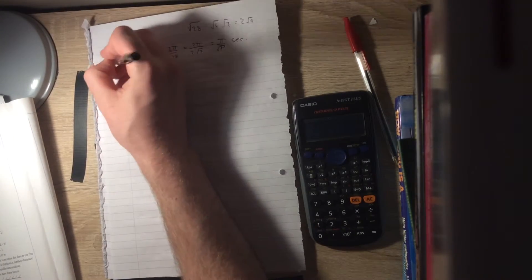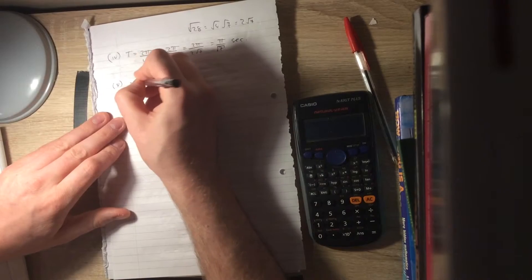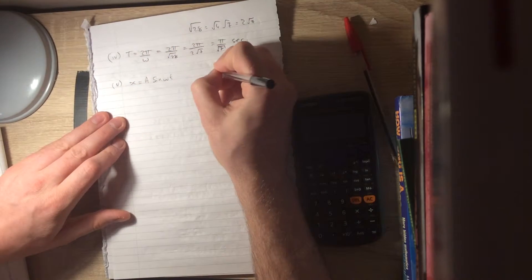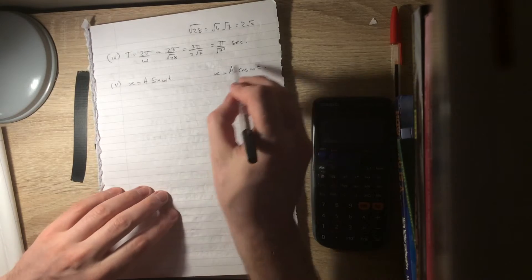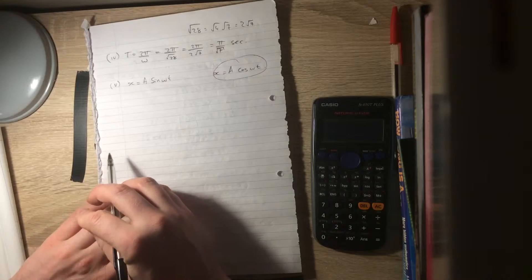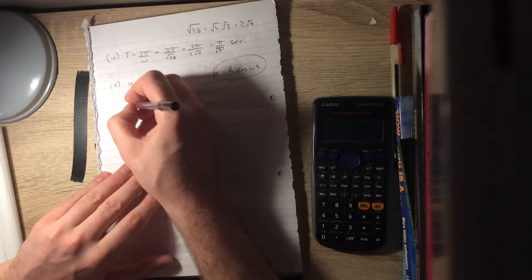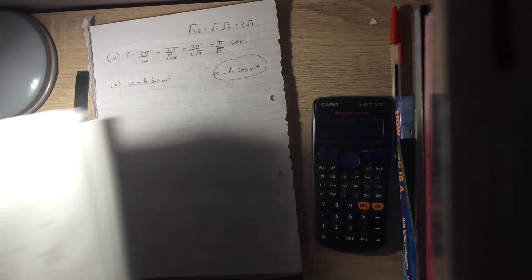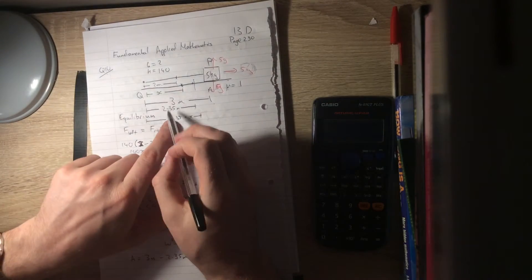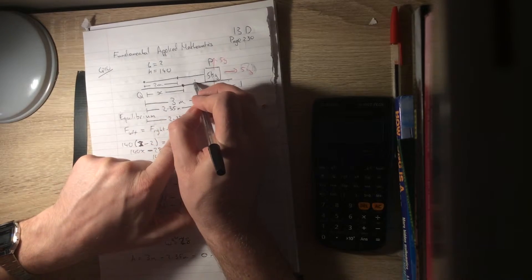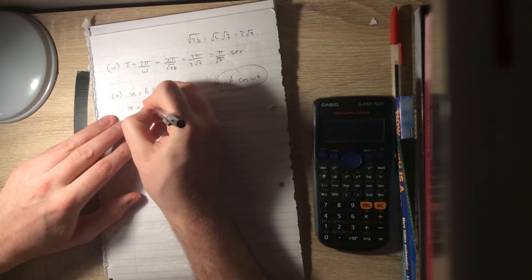And part 5, calculate the time taken by the particle to travel from A to a point 2 metres from Q. So we need to make our decision, are we going to use A sine omega t or A cos omega t for these time problems? And because we're starting from an extreme point rather than from the centre, it's going to be A cos omega t. When it's travelled from A to a point 2 metres from Q, that's 0.35 beyond equilibrium. So 2 metres from Q, there's our equilibrium, we've gone past that by 35 centimetres, by 0.35. So x at that point is minus 0.35.